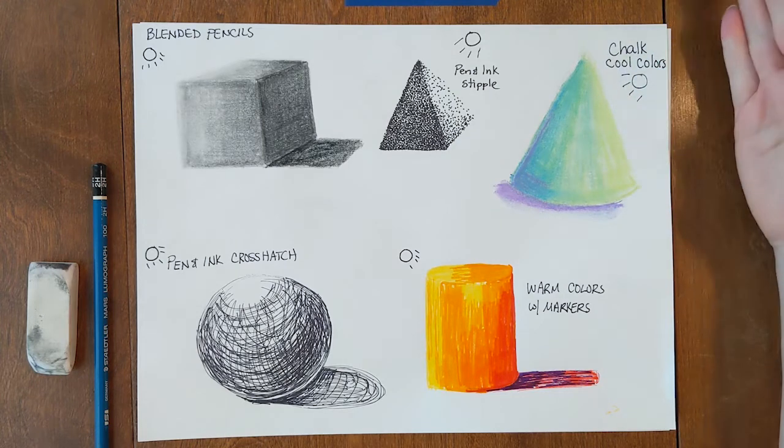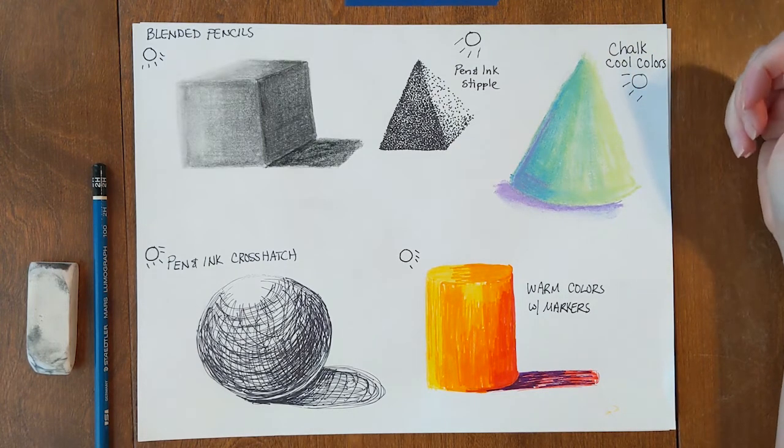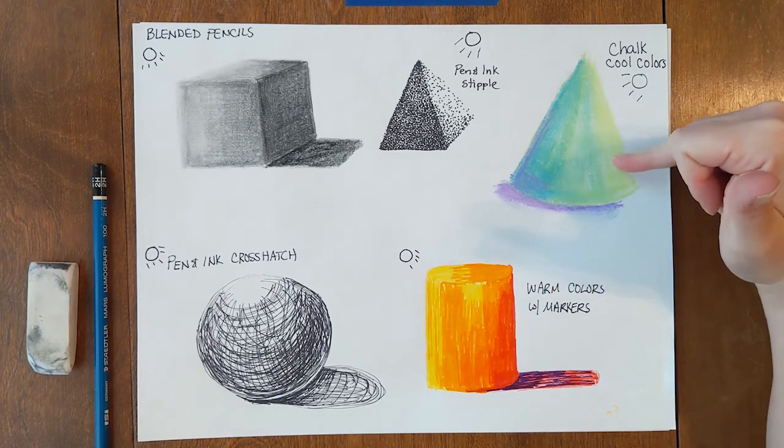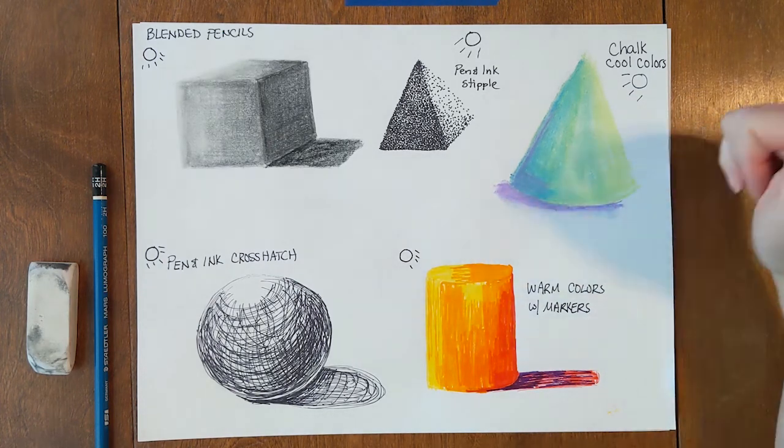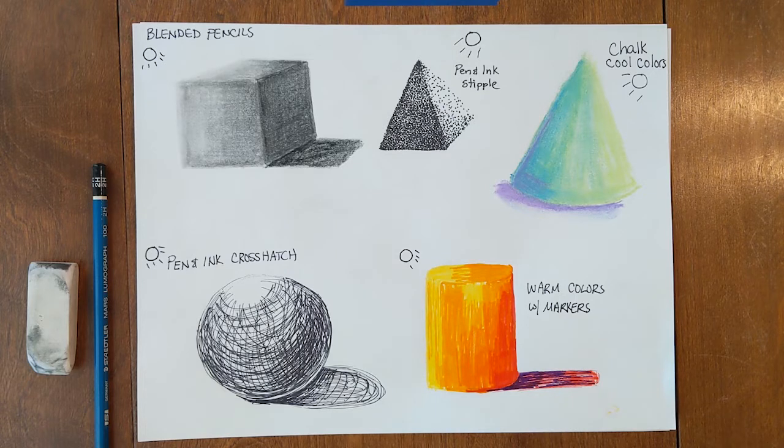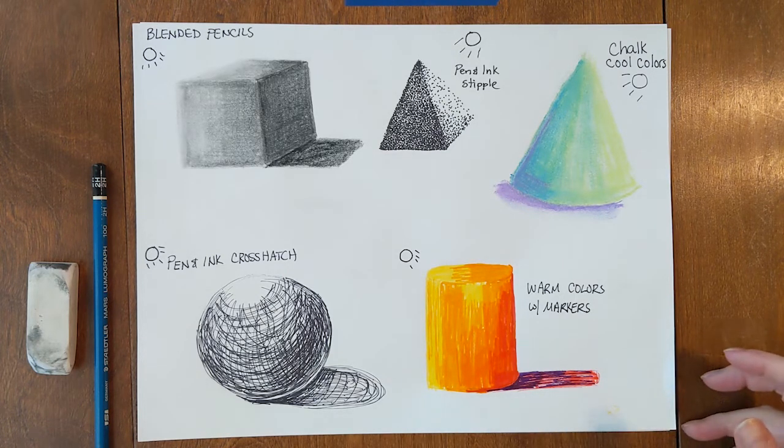And then over here on the cone, I used cool colors, and all I used was chalk. Chalk you'd use on the sidewalk or on your chalkboard. And I used my cool colors. I used my green and my blues, and then my purples for the shadows. So on the page underneath this, I'm going to show you how to draw a couple of these shapes, and then I'll talk a little bit more about some of the supplies you can use and how you can use it to shade them.